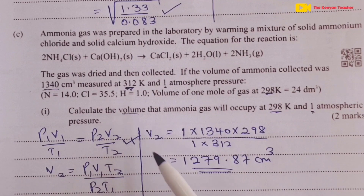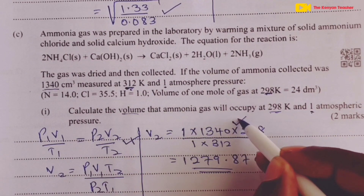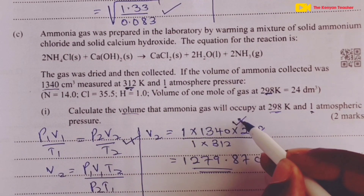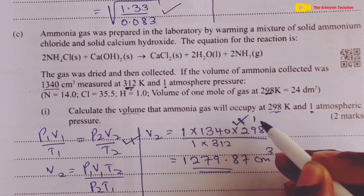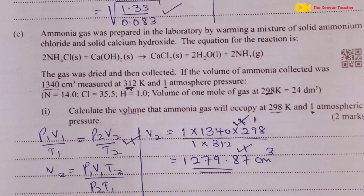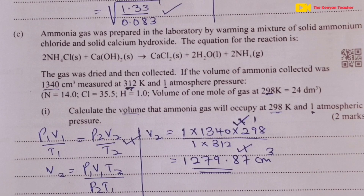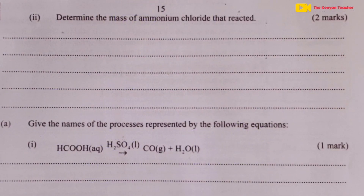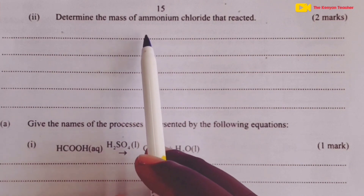The mark breakdown: half mark for using the correct universal gas equation, one whole mark for correct substitutions, and half mark for the correct answer of 1279.87 cm³.